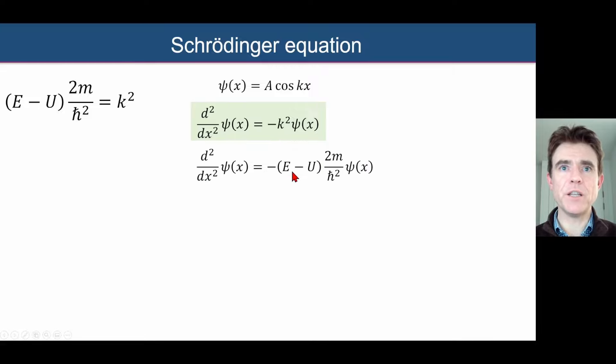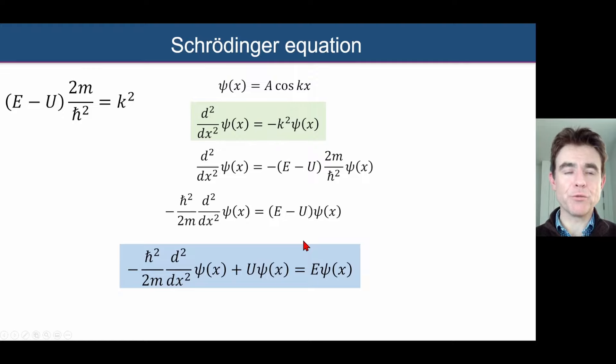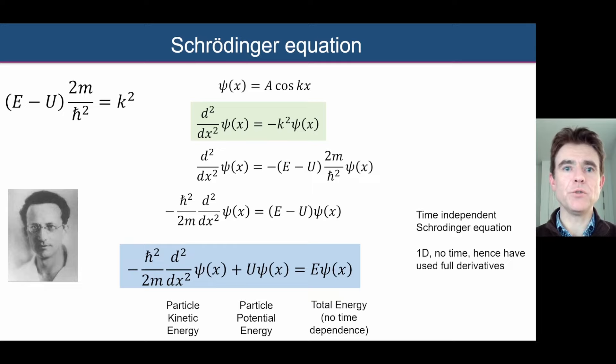So let's substitute that in here, and that's a very simple direct substitution for k squared. Then let's rearrange that, so I've put the 2m down here, h cross squared up there, minus over to the other side of the expression. Now if we rearrange that, look what we get. We obtain the time-independent Schrödinger equation, basically saying that the kinetic energy plus the potential energy is equal to the total energy. Now this is just the 1D version with no time dependence, and it's only in 1D, not in 2D or 3D, and hence we've used full derivatives here in this expression.